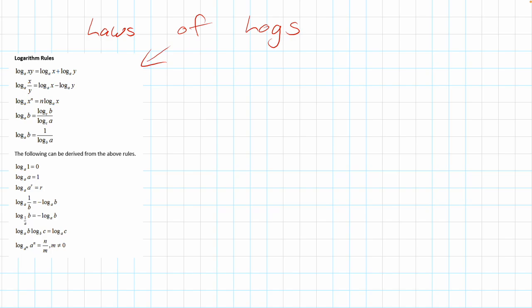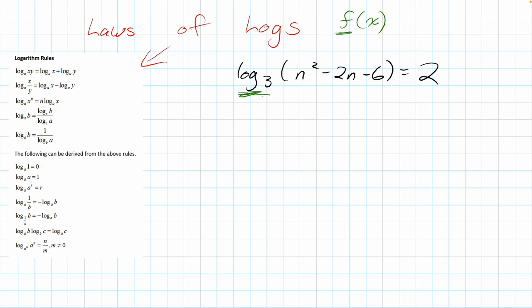We have a question here: log base 3 with an argument. Sometimes it's difficult to realize what applies to what when we're reading it. A log is actually like a function — if you remember function notation, a log is a function where we put something into the argument. Inside the log, a series of operations happen. We'd normally use a calculator, but our argument has variables, so we need to simplify.